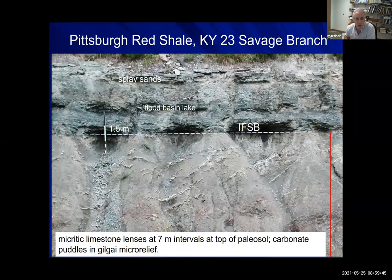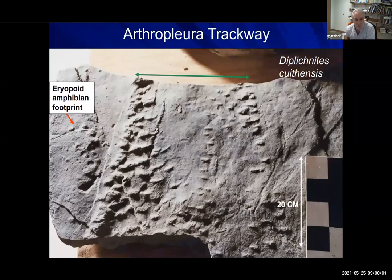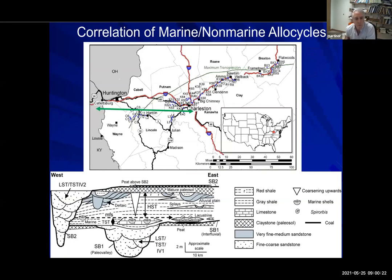A closer look at the Pittsburgh Red Bed paleosol and the flood basin deposits on top of it — a good example of an interfluvial sequence boundary, which is how I've interpreted the tops of these paleosols, with flood basin deposits and splay sands on top that have some interesting tracks. This is a trackway from Arthropluera showing the Diploconites-type trace — very large, about 30 centimeters wide — and then tetrapod footprints, probably areopoid amphibians, pretty much on the same bedding plane.